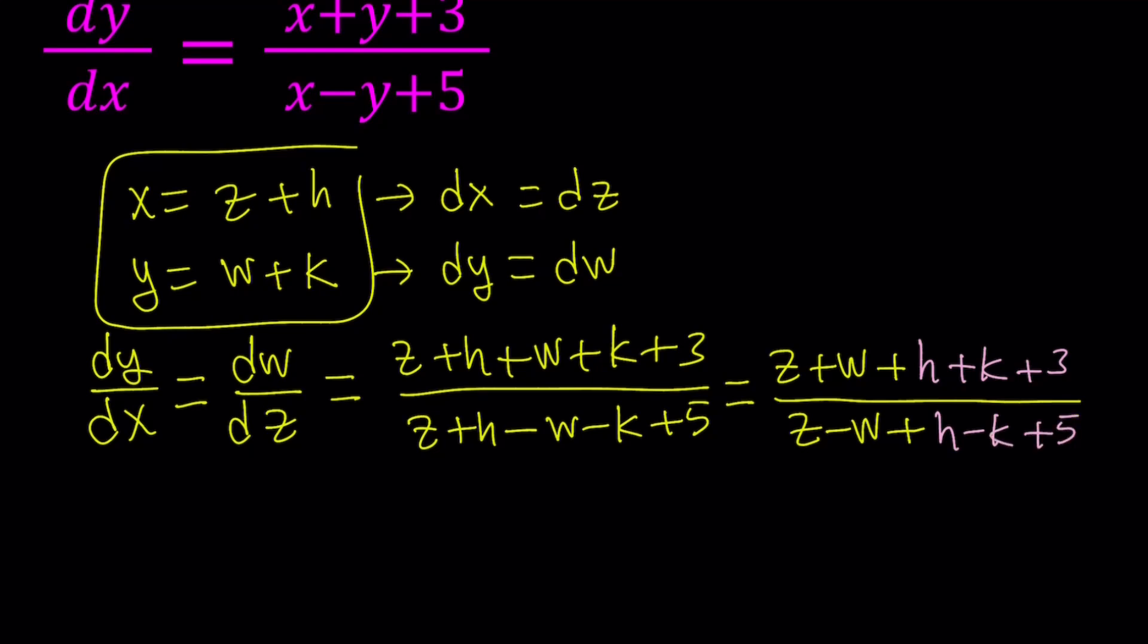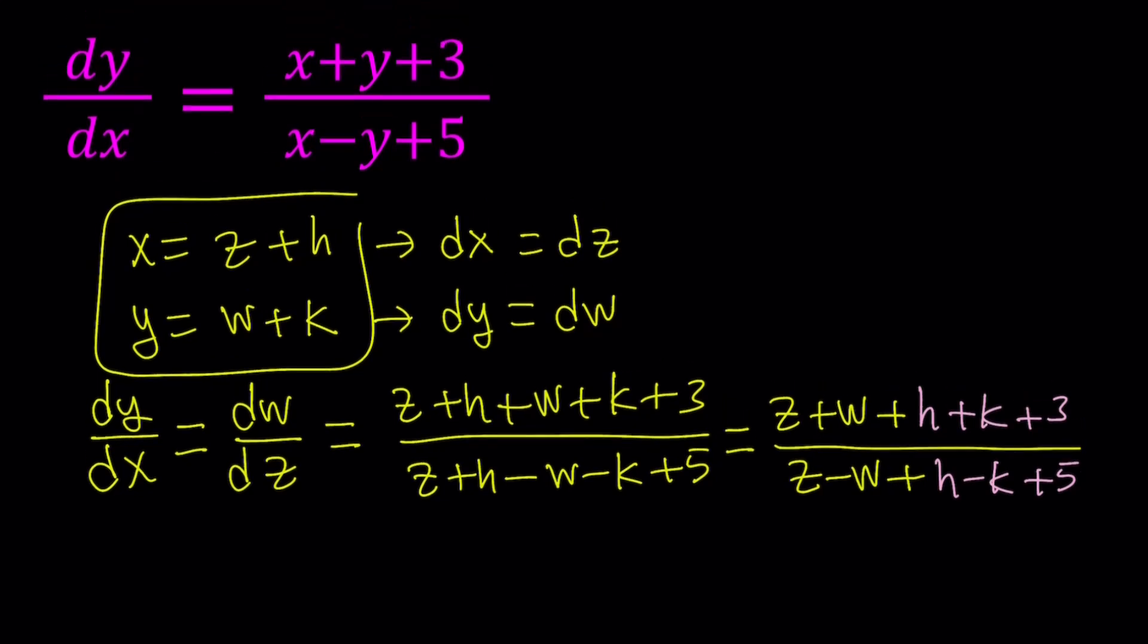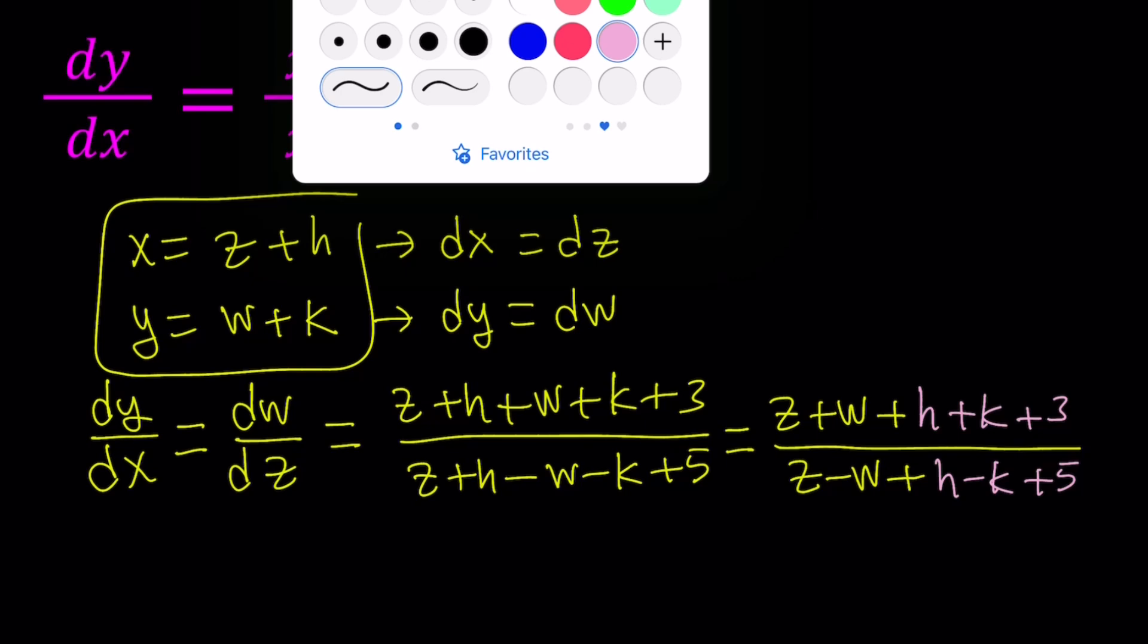Now, take a look at this expression. And remember what I told you at the very beginning. I said it would have been nice if we had x plus y over x minus y. We don't have that. But we can have z plus w over z minus w, which is going to make this a homogeneous equation. And that is easy to solve by substitution.